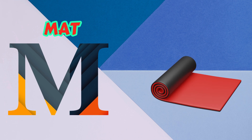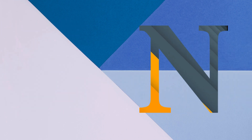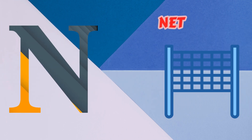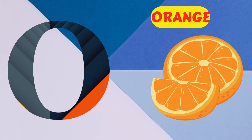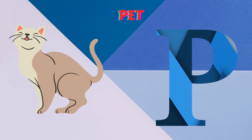M is for Mat. M-M-Mat. N is for Net. N-N-Net. O is for Orange. O-O-Orange. P is for Pet. P-P-Pet.